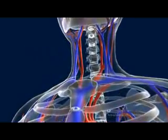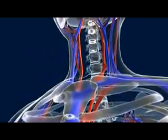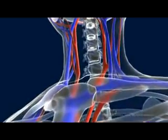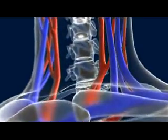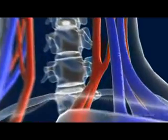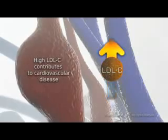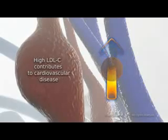If a plaque ruptures, the resulting blood clot may block the artery and cause a heart attack or a stroke, which can often be fatal. Atherosclerosis may also cause the artery wall to weaken, causing it to bulge under the pressure from the blood. This bulge, called an aneurysm, can rupture, and the resulting bleed, called a hemorrhage, can be fatal.